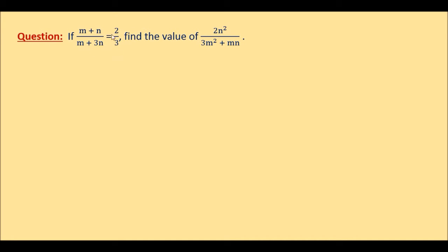We can do the cross multiplication and take all the terms containing m to one side of the equation and all the terms containing n to the other side. But then we will only get the relation between m and n — we will not be able to find the numerical values of m and n, because it gives us a single linear equation containing two variables. Therefore, it will not be possible to find the numerical values of m and n separately.